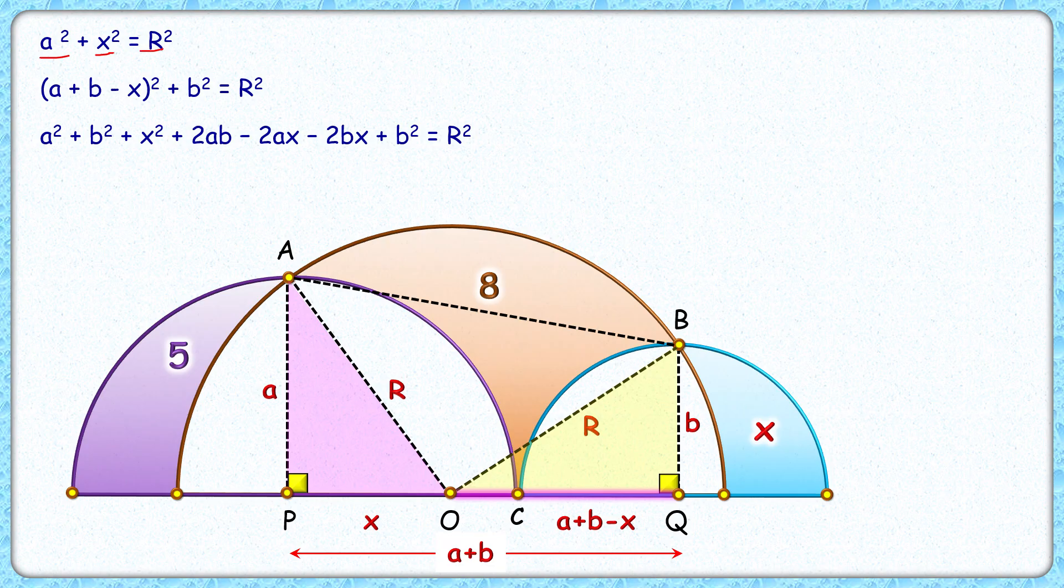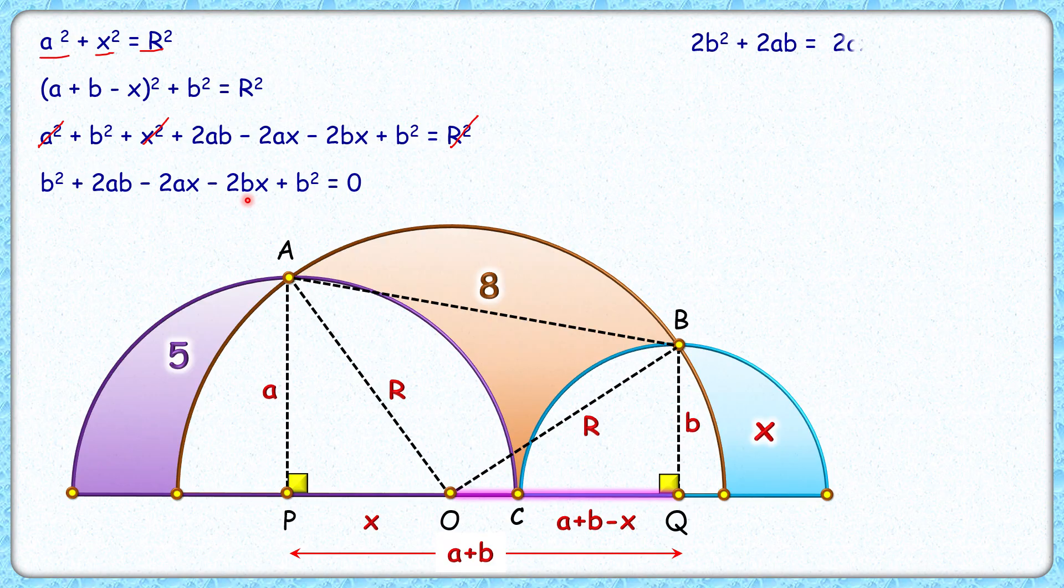So on the left-hand side, A squared plus X squared we can cancel with the right-hand side R squared. We'll get the equation as B squared plus 2AB minus 2AX minus 2BX plus B squared equals 0. Now let's take the negative terms on the right-hand side. LHS and RHS, two will get cancelled down.